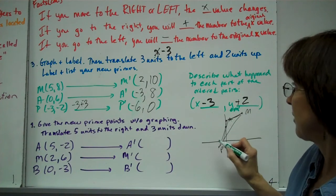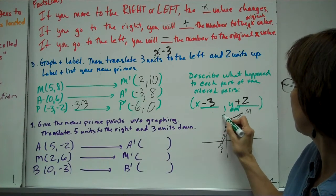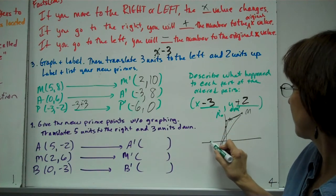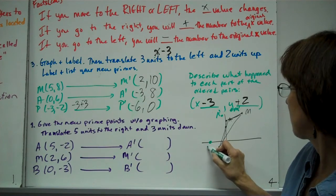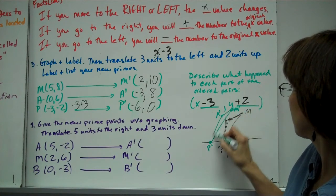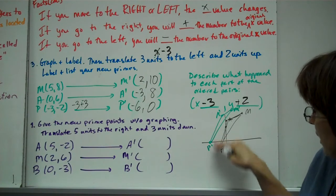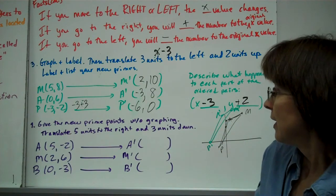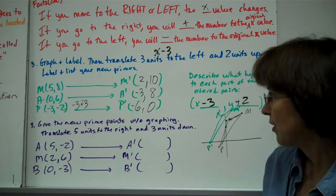I have my A prime is (-3,8), so it's up a little bit. Your P prime is (-6,0). So yeah, it did kind of shift my little triangle. You see it went up a little bit and then over a little bit. We have graph paper, it'll come out real accurately.